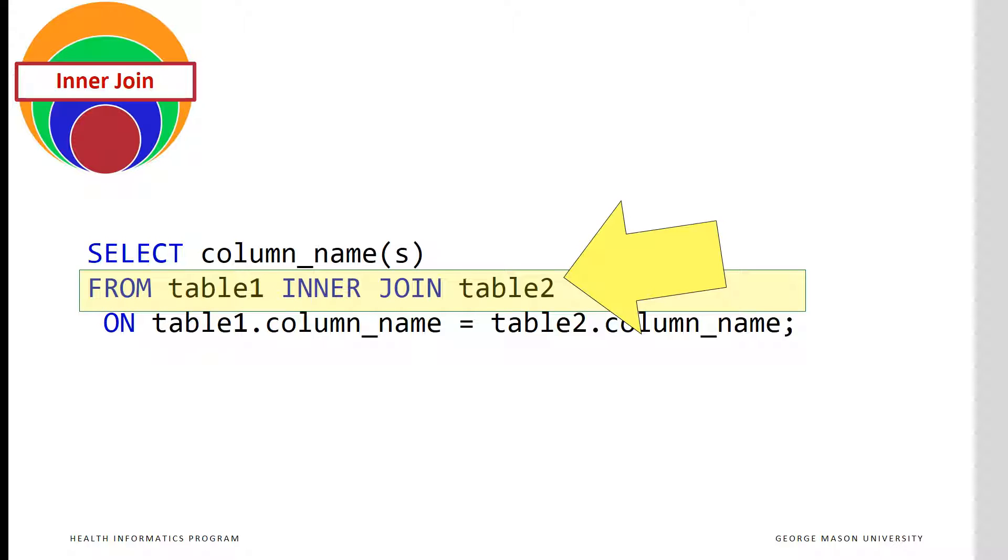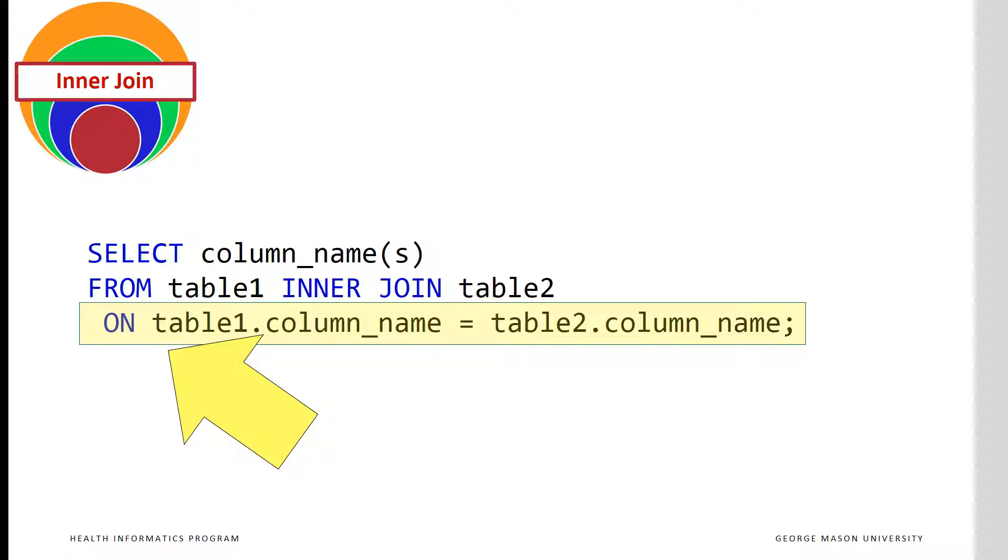The from portion of the code specifies the two tables that should be joined. The reserved word inner join should appear between the two table names. This is followed by the on statement which specifies one field from each table which must be equal to each other. The two fields must be equal before the content of the tables are joined together.